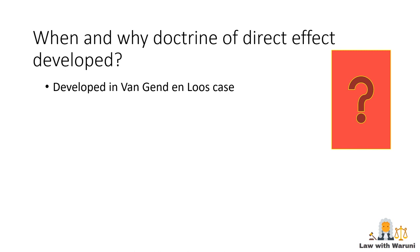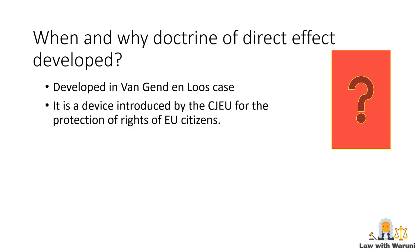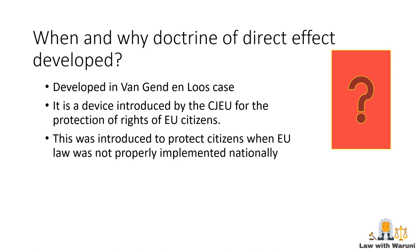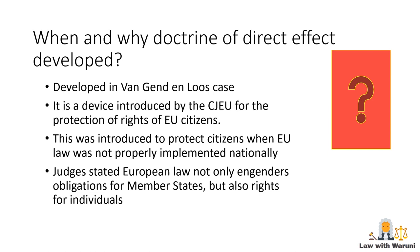Direct effect was first identified in the case of Van Gend en Loos in 1963. It can be considered as a device introduced to protect the rights of EU citizens, especially when those rights could be better protected under EU law. If EU law which protects rights is not implemented, or wrongly implemented, in the national legal system, then EU citizens could rely on EU law directly and enforce their rights through the national court.